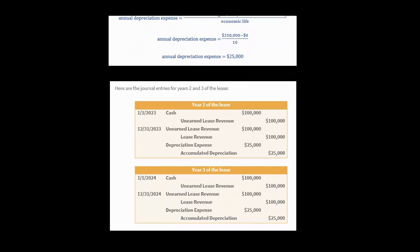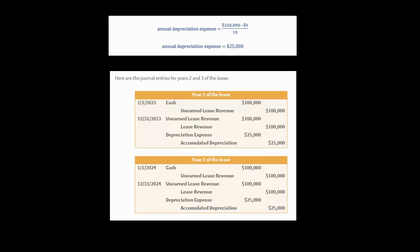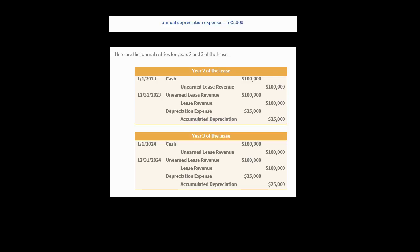Years two and three of the lease follow the same process, and notice it's a lot more straightforward than a finance lease where you have to set up a lease amortization table. We don't have a lease receivable and no interest revenue to worry about. In year two, you increase the cash account when the lessee pays the lessor, record the liability for unearned revenue, and then at the end of the year recognize the $100,000 revenue and record $25,000 in depreciation. Year three is the same deal.